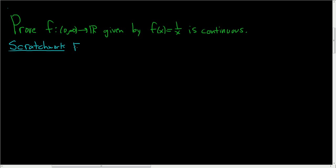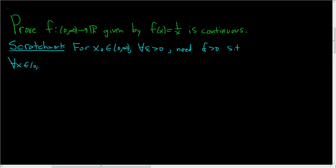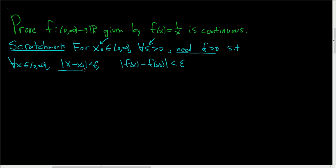We need to show that for any x naught in this interval, for all epsilon greater than 0, we can find a delta greater than 0, such that for all x in this interval, whenever the distance between x and x naught is less than delta, the distance between f of x and f of x naught is less than epsilon.